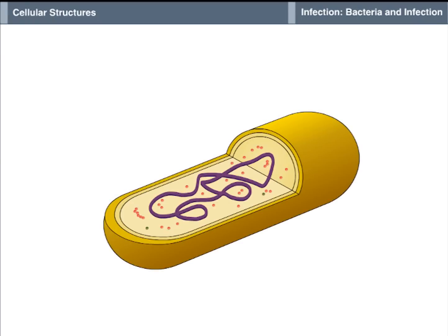The basic components of bacterial cells are the cell wall, the plasma membrane, the cytoplasm, the chromosome, and the ribosomes.